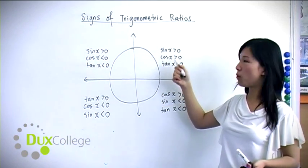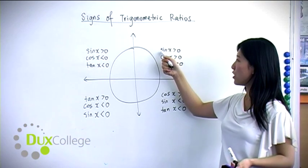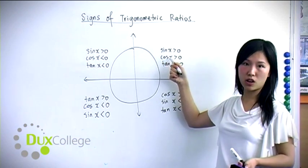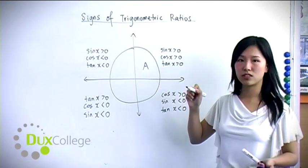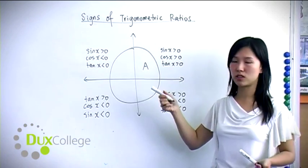In the first quadrant, all the ratios - sine, cosine, and tangent - are positive, so we use the letter A, which symbolizes all of them are positive.